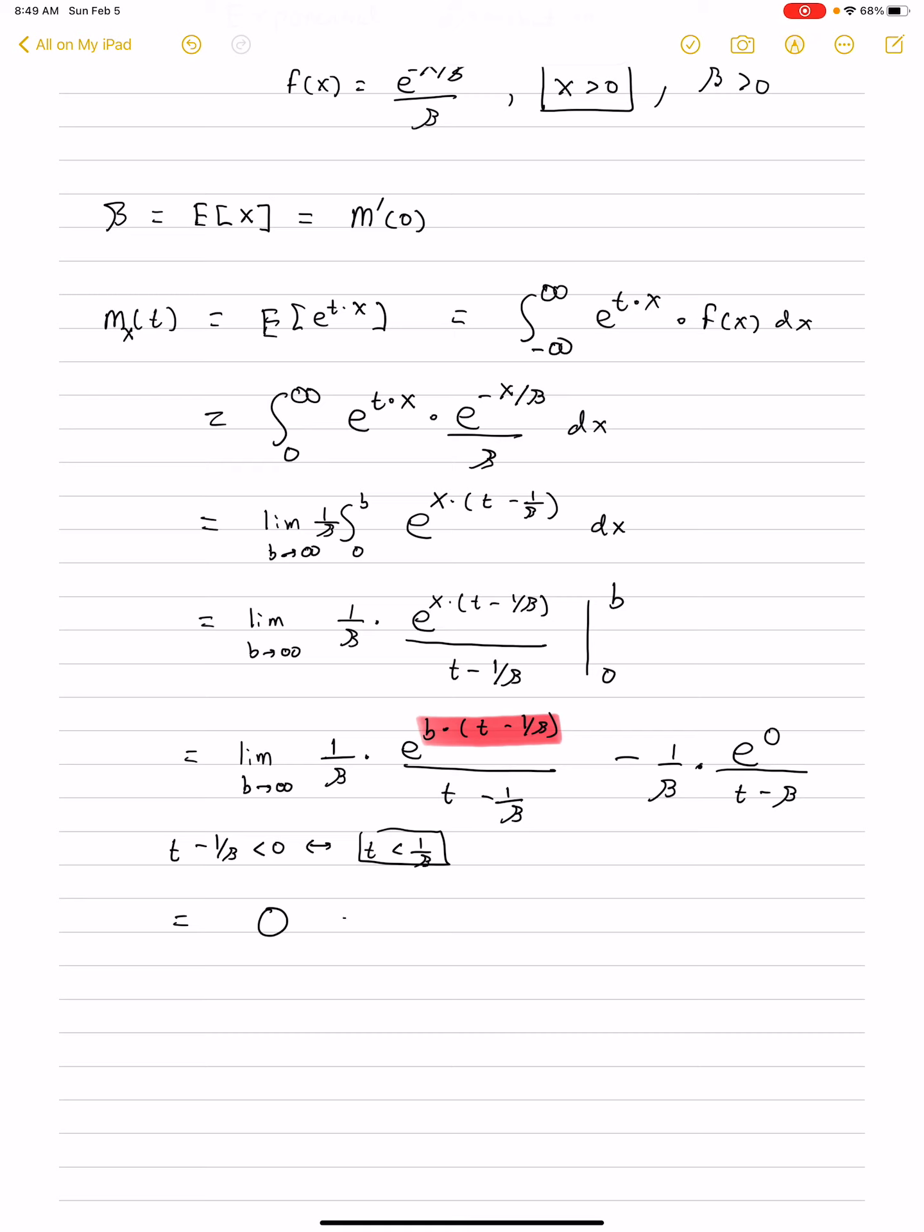So, we're going to subtract 1 over beta times 1 over t minus, and I apologize, I made a little bit of a mistake. That should be 1 over beta right here. So, 1 over beta. And when we simplify this, this will be 1 over, we'll pull the negative down. This will be 1 minus beta t. And that is the moment generating function of an exponential.